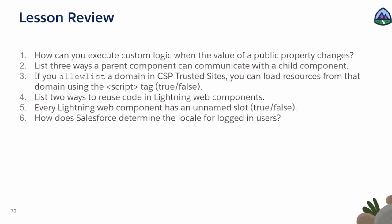You can call a getter — so if a public property is changing, the getter will automatically be called from the UI to change the value. Another way is you can call a public method. There are two ways to dynamically call a method if the value of a public property is changing. You can use the dollar attribute in a wire service — that's going to invoke the logic again, but that's mostly data retrieval. But if it has to be custom logic when the public property is changing, use a getter for that public property value.